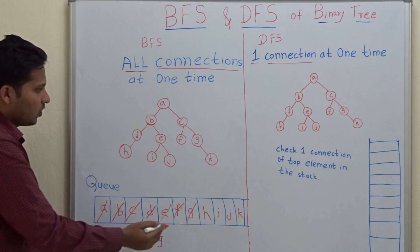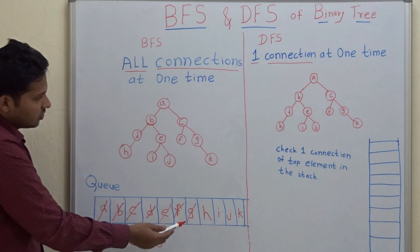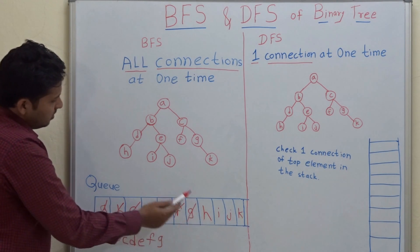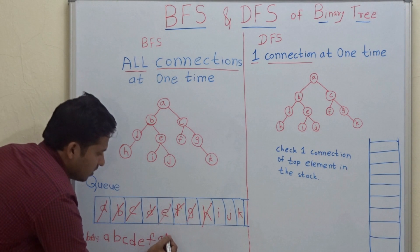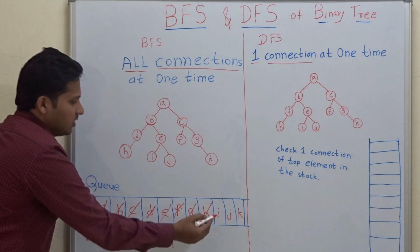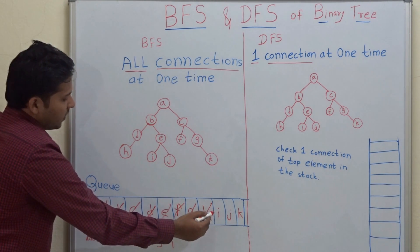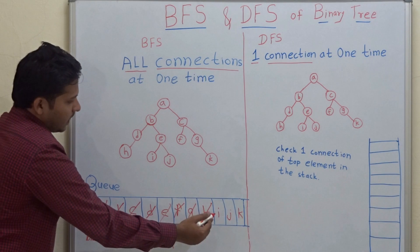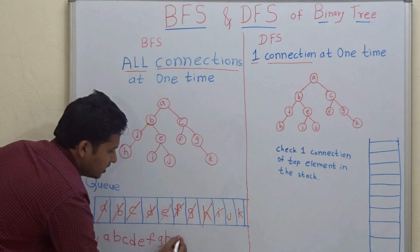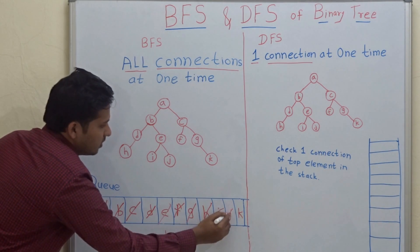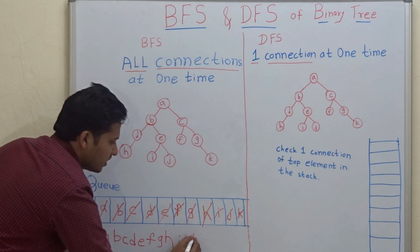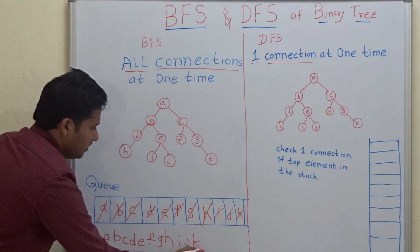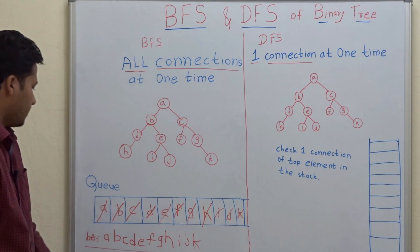What are the connections of H? No connection of H, so dequeue H directly. What are the connections of I? No connection. Dequeue I. J has no connection, so dequeue J. K has no connection, so dequeue K. This is your BFS.